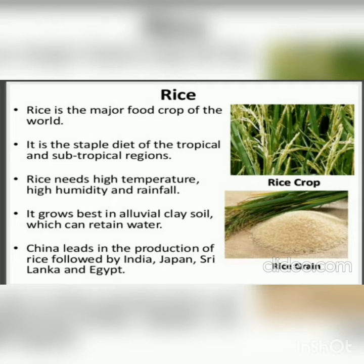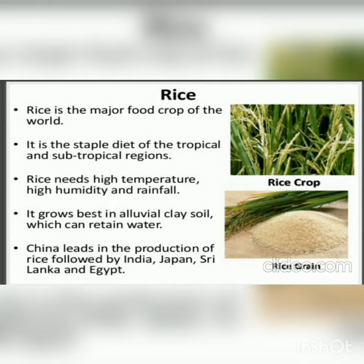Rice is a major food crop of the world and is the staple diet of the tropical and subtropical regions. Rice needs high temperature, high humidity, and rainfall. It grows best in alluvial clay soil, which can retain water. China leads in the production of rice, followed by India, Japan, Sri Lanka, and Egypt.